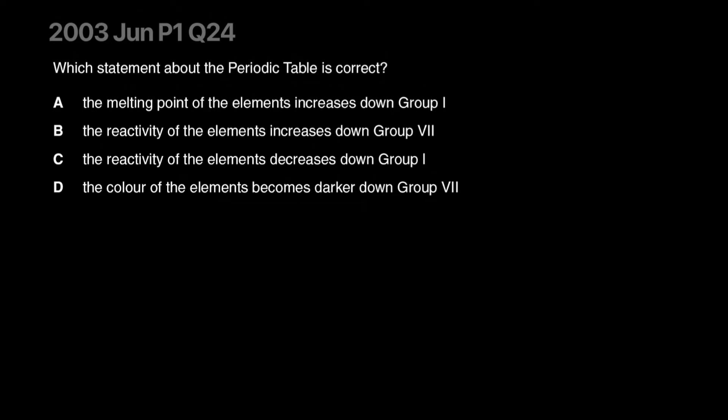Which statement about the periodic table is correct? Melting point increases down the group or reactivity of the element increases down the group? Reading this, I recall one thing: you have your halides, chlorine, bromine, iodine. What's happening to their color is chlorine is a yellow gas, bromine is an orange liquid, and iodine is a black solid. It is getting darker as you go down group 7. The correct answer is D.